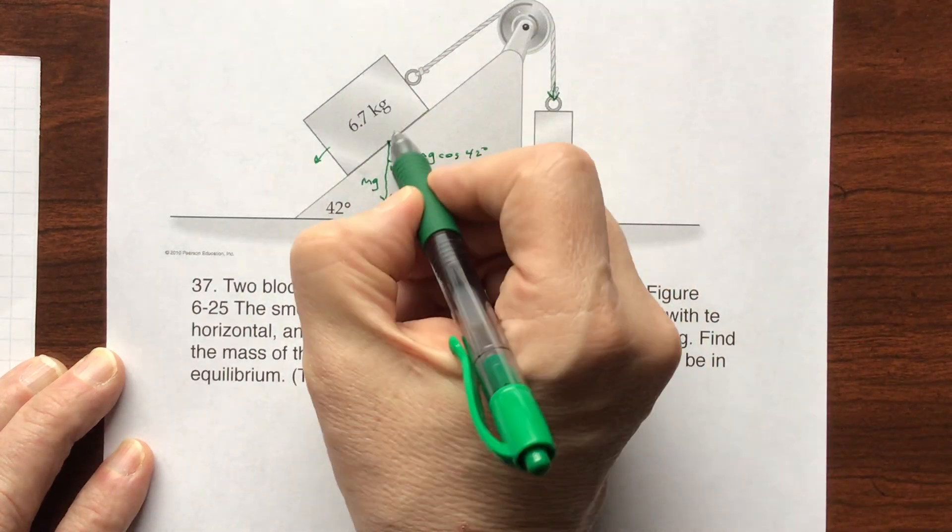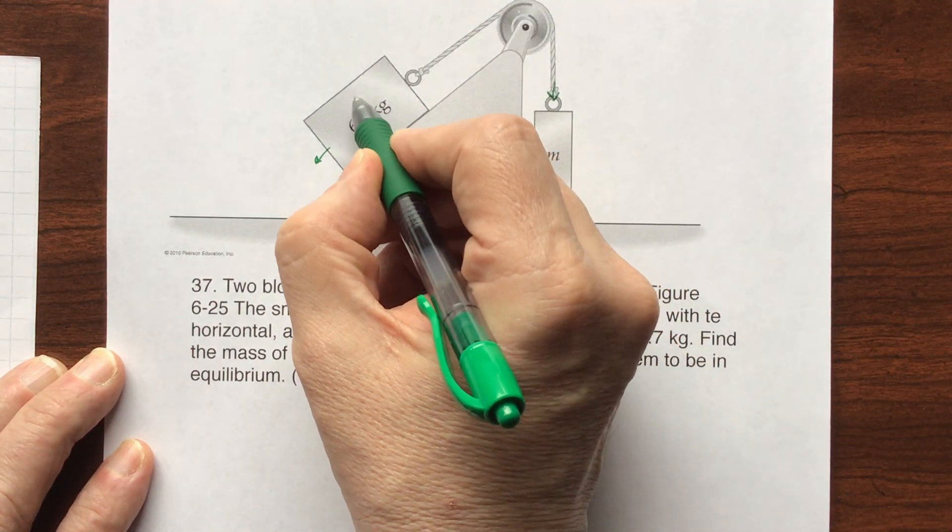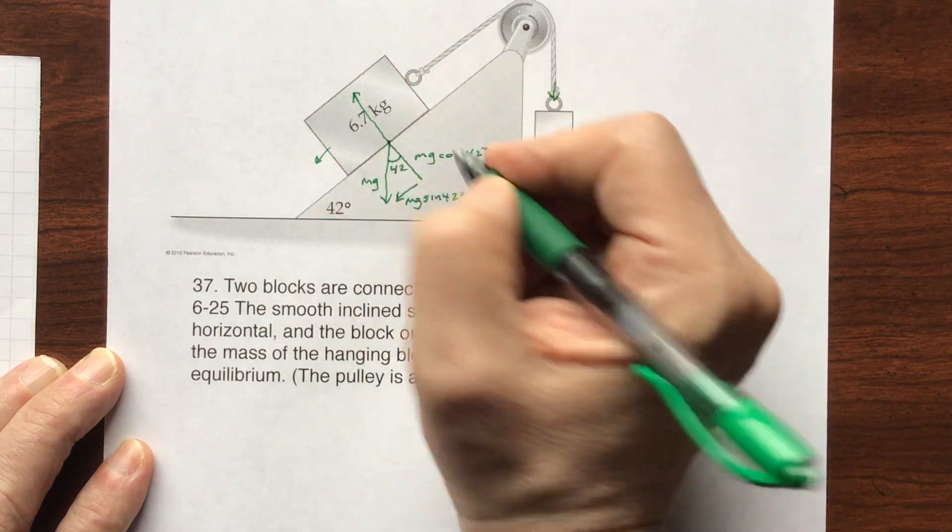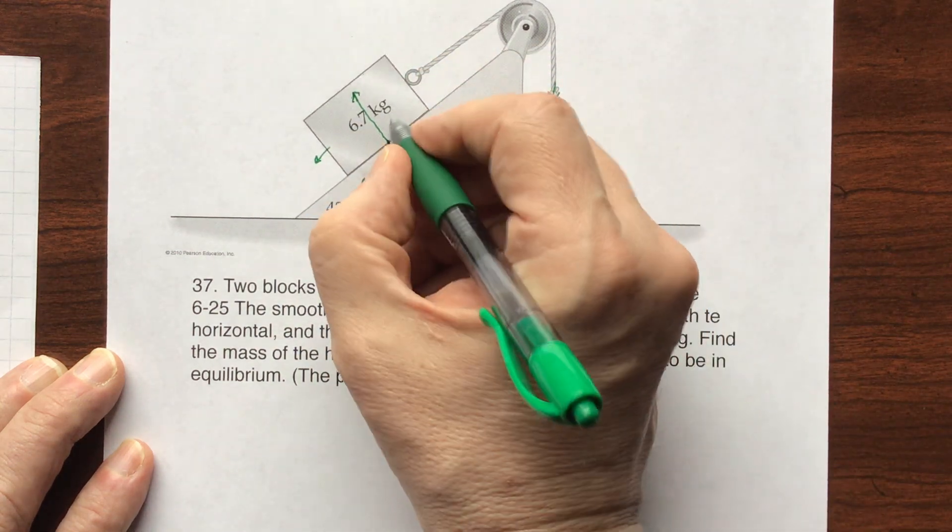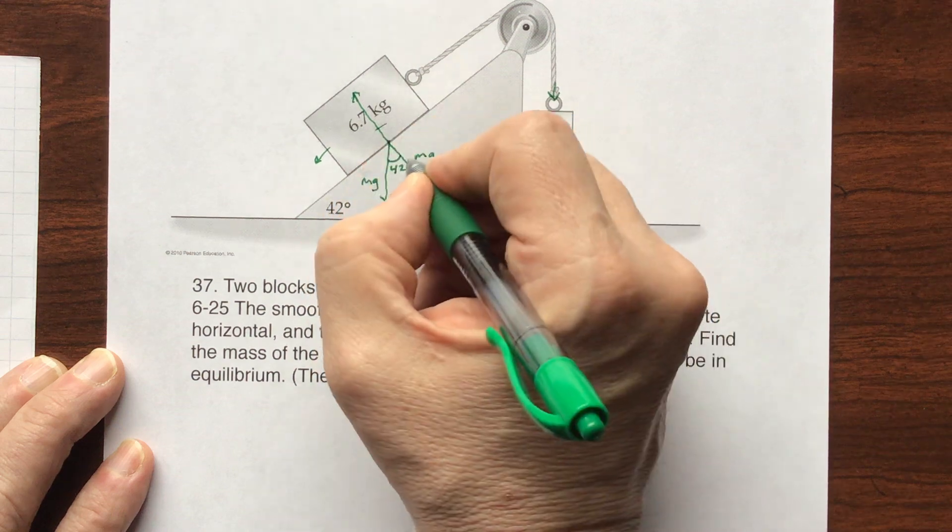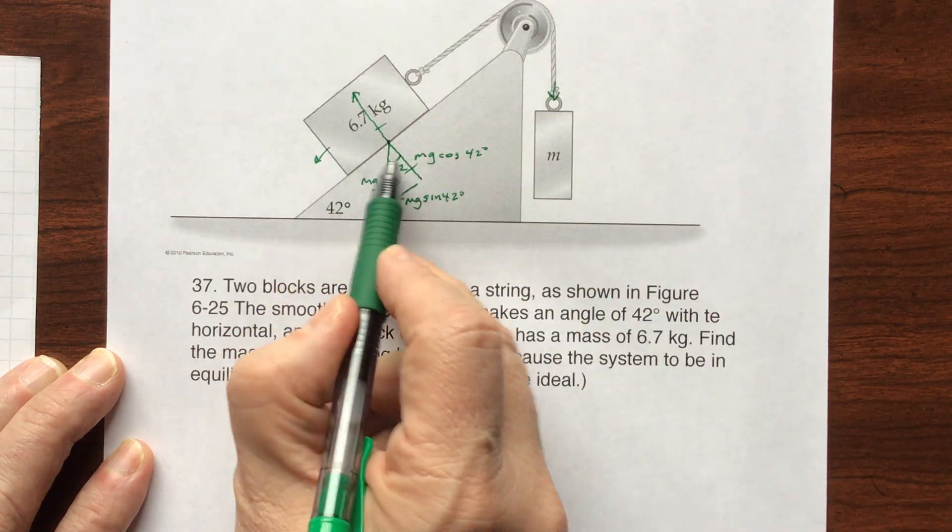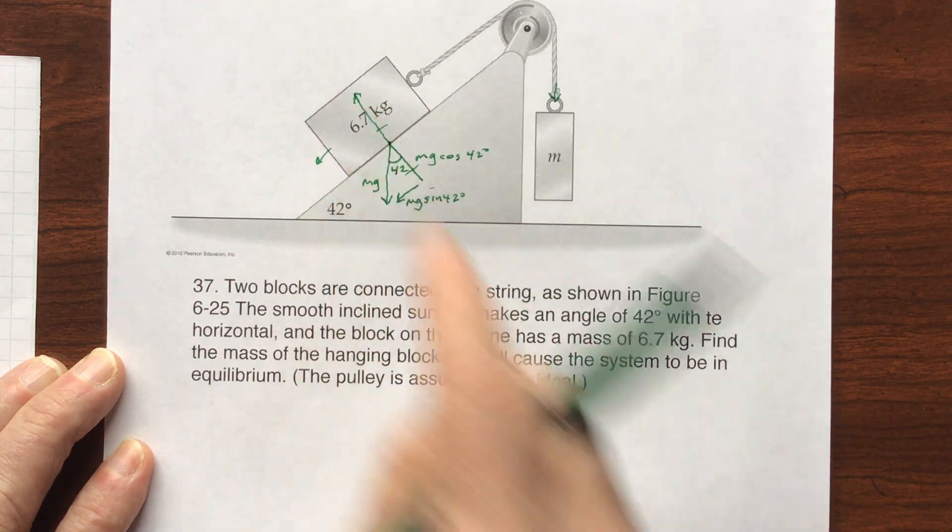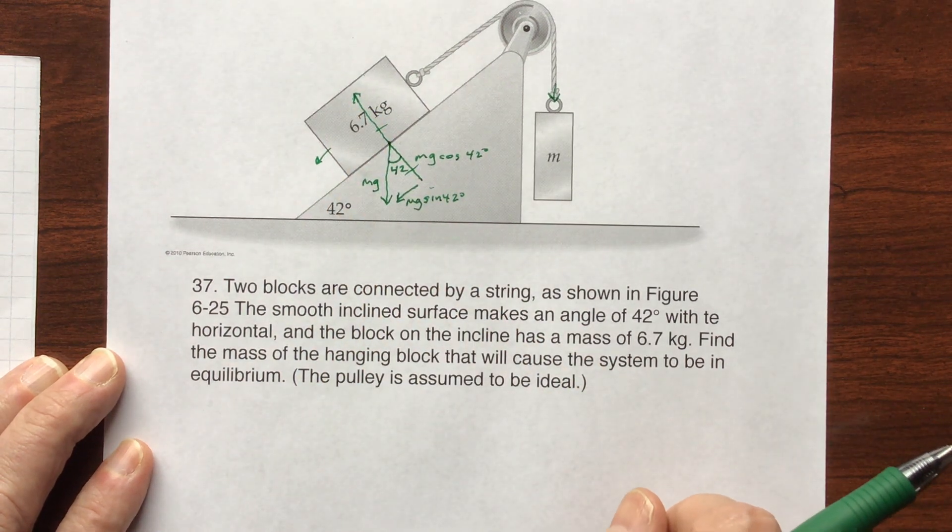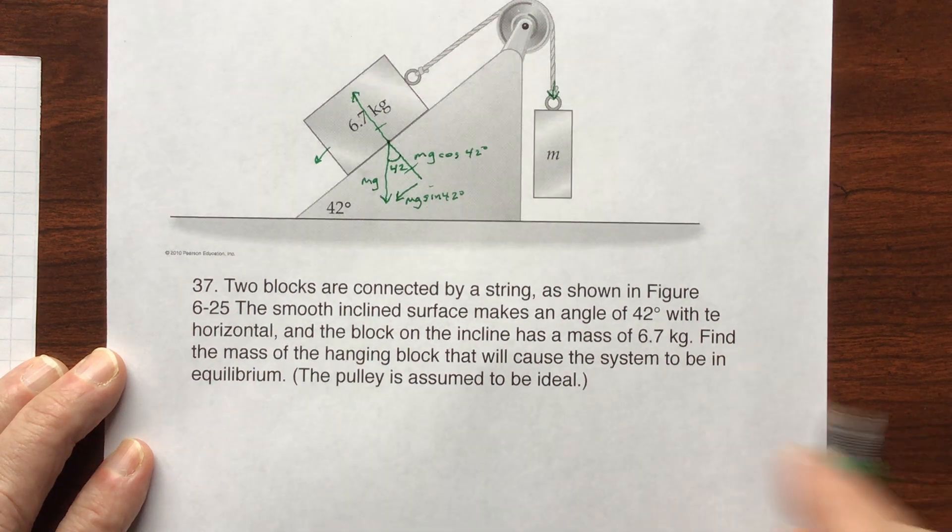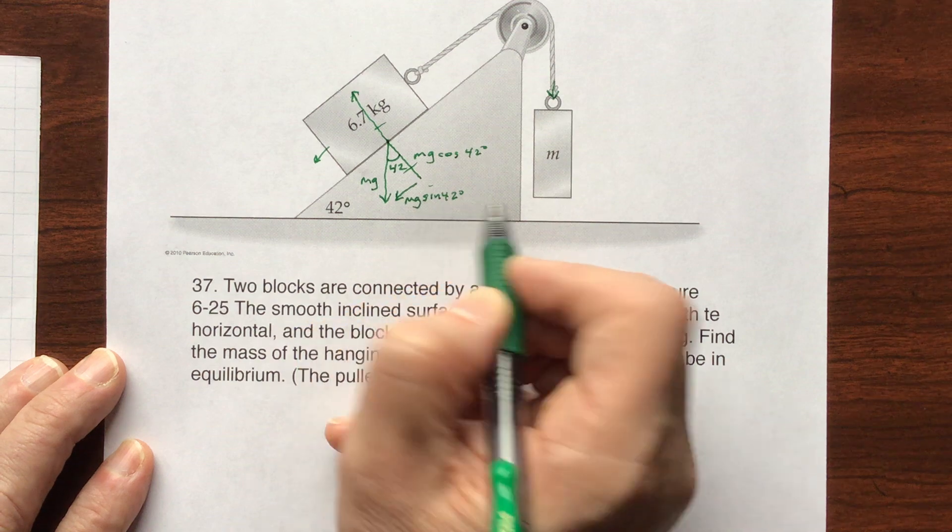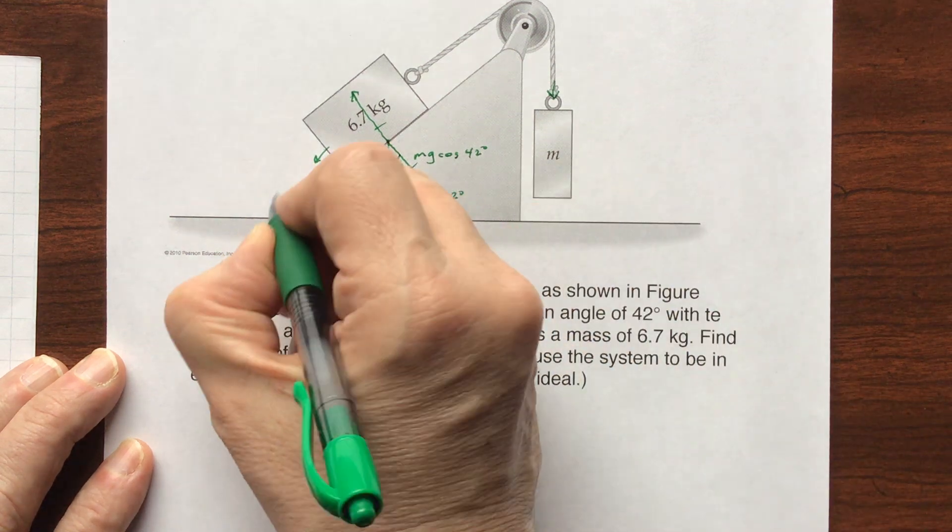We do know that there is a support force keeping that block from going down into the pyramid, so this is going to equal this, equal and opposite forces. That means the only component of mg that's left is mg sine of 42, which is here.